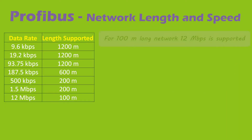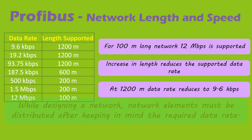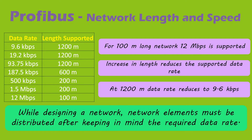In a Profibus network, the maximum permissible data rate varies with network length. For a network length of 100 m, 12 Mbps data rate is supported, while at 200 m the supported data rate reduces to 500 kbps. Further increases in network length reduce the supported data rate down to 9.6 kbps. Therefore, when designing a Profibus network, the elements should be distributed so that the total network length is within a reasonable limit and the desired data rate is achieved.